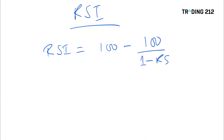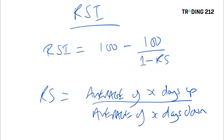Before we look at how it works in the real world, let's go through the formula — how this thing is actually calculated. For those of you who are fans of the maths, the RSI is 100 minus 100 over 1 plus RS. RS is the average of X number of days up divided by the average of X number of days down — this is really at the core of the RSI.